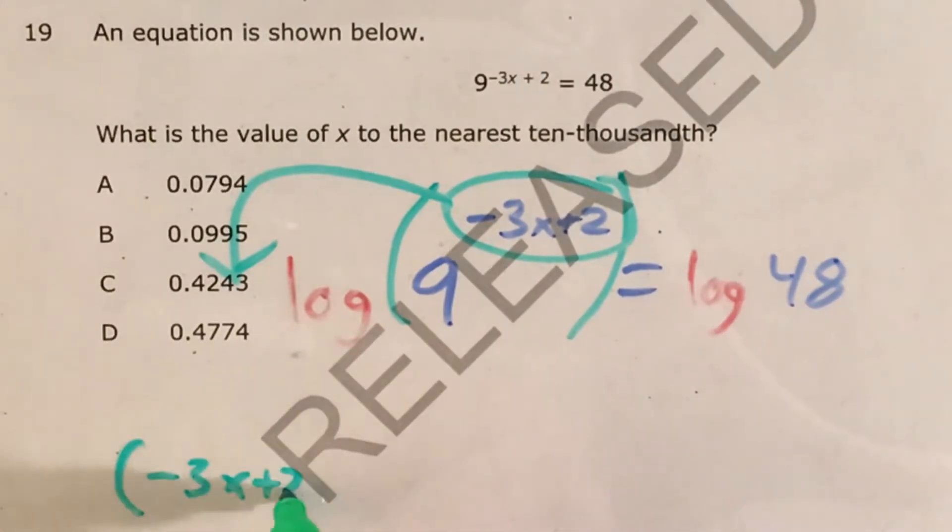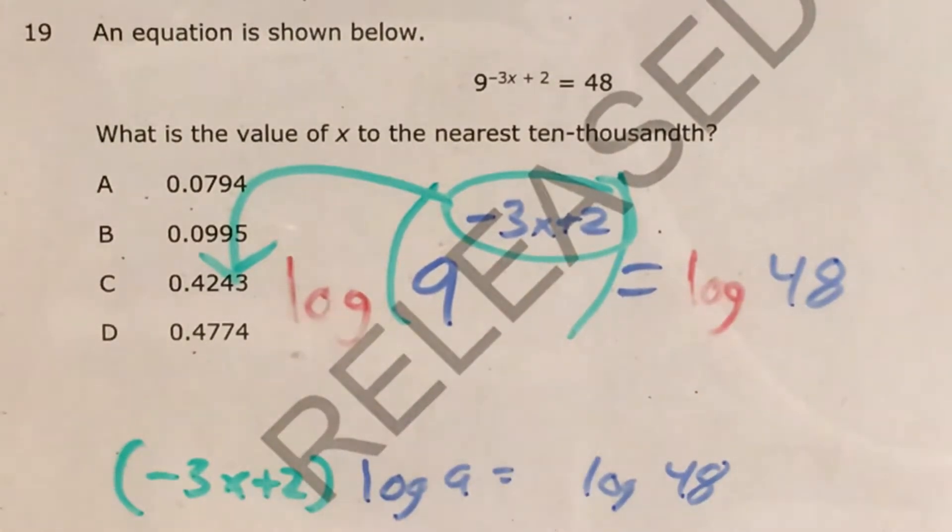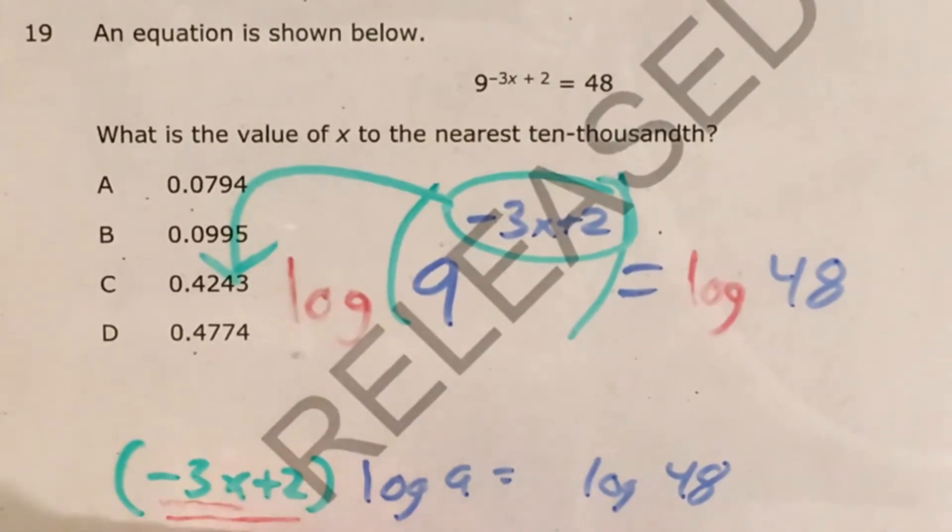So that tells me that now I have negative 3x plus 2 times log 9 equals log 48. I'm trying to get x by itself and I can see that's multiplied by negative 3, we've got plus 2 with that, but this whole thing in parentheses is being multiplied by log 9. So I want to go ahead and divide by this log here.